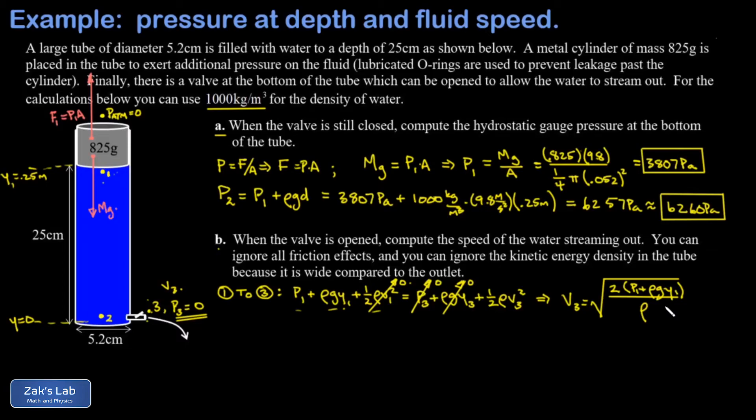There's our general expression for v3. We sub our numbers: P1 was 3807 plus ρgy1, so 1000 times 9.8 times 0.25, all divided by the density approximately 1000. I get 3.54 meters per second.